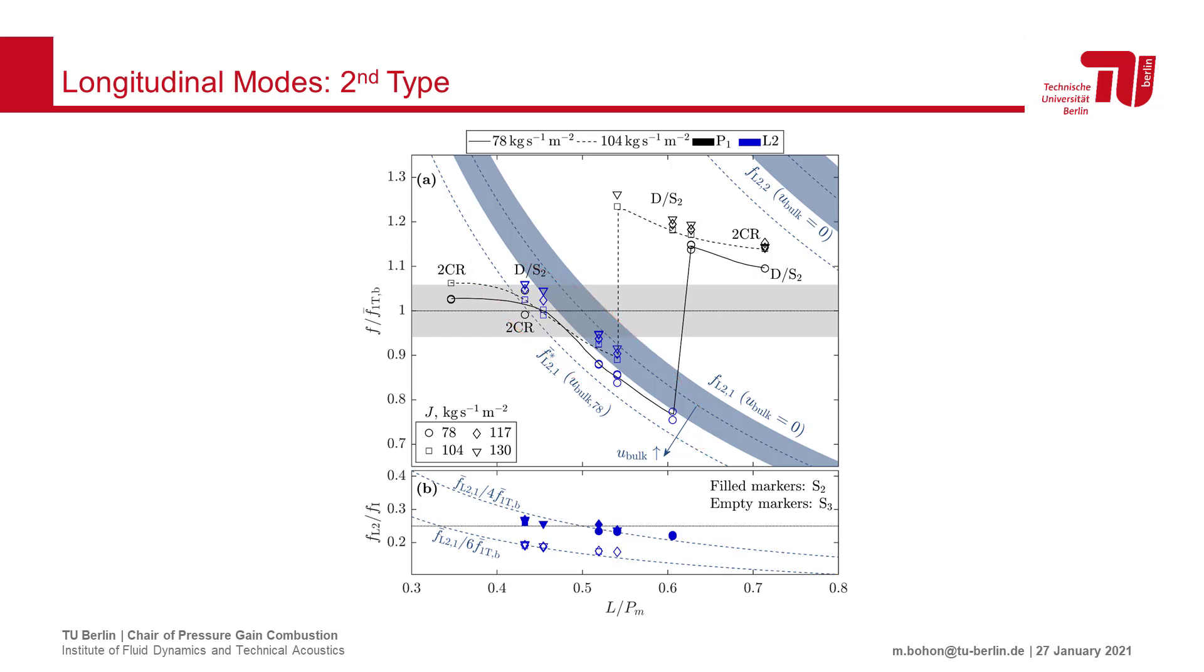Therefore, it appears that as the combustor length approaches a length over perimeter of about 0.5, the acoustics of the L2 mode are sufficient to entrain and dominate the rotating component.